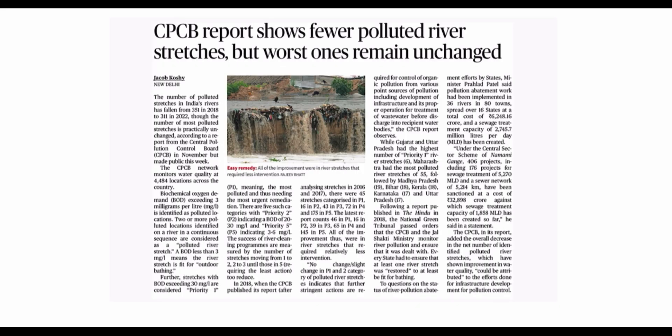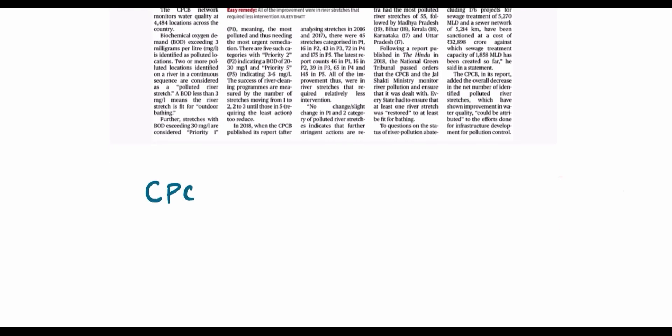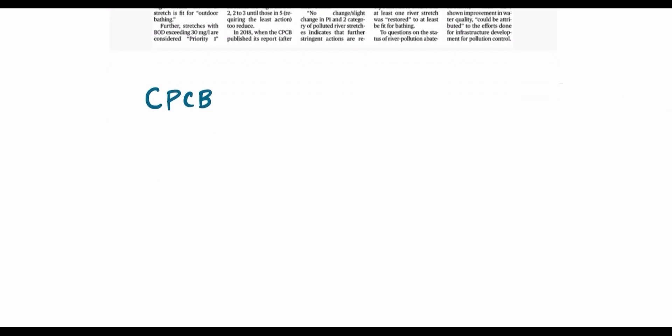The first article is a report by the Central Pollution Control Board. The report shows an improvement in the water quality of rivers in India. In this context, we have to first understand why the Central Pollution Control Board has been established and what are its main objectives and functions.